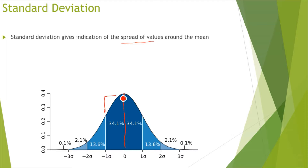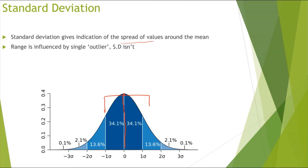Looking at one standard deviation, this area tells me that 68.2% of my data is located within one standard deviation of my mean. And the standard deviation is better than using range because range can be influenced by a single outlier. If I had an outlier which was a really high number or a really low number, this could affect my range, but my standard deviation wouldn't be affected by a single outlier.